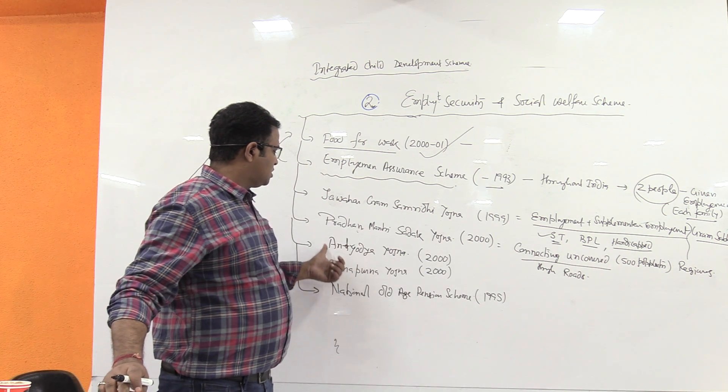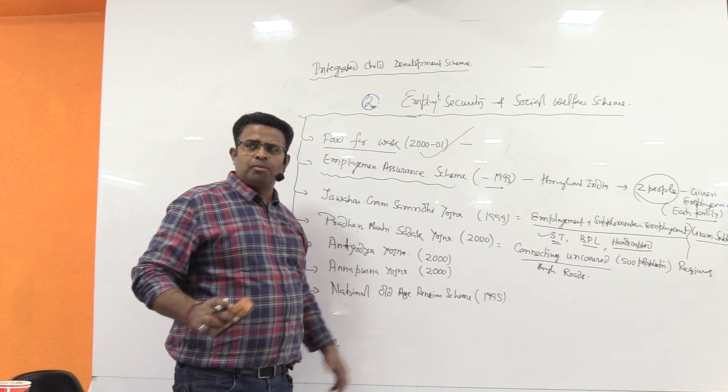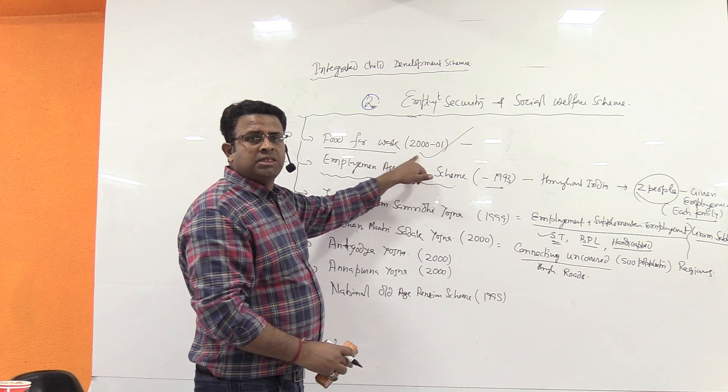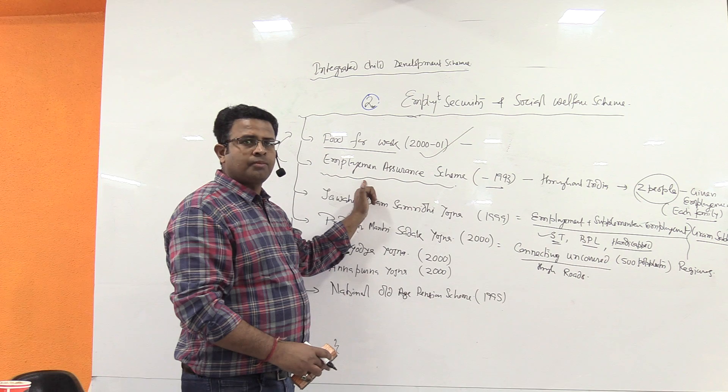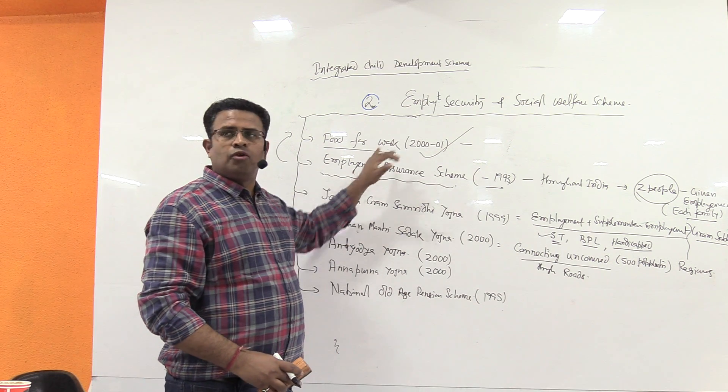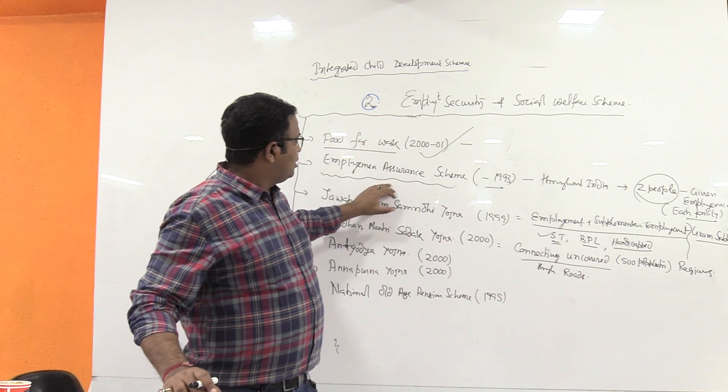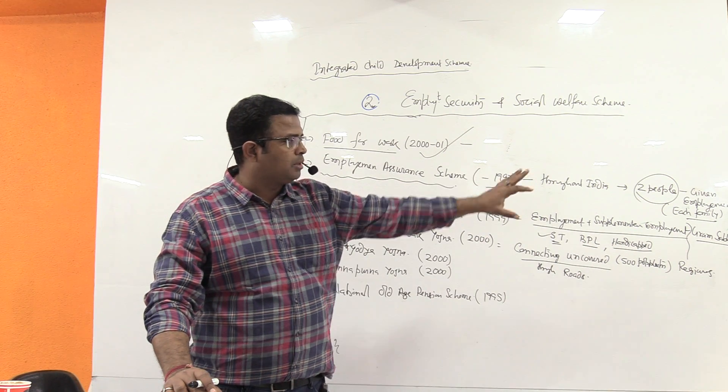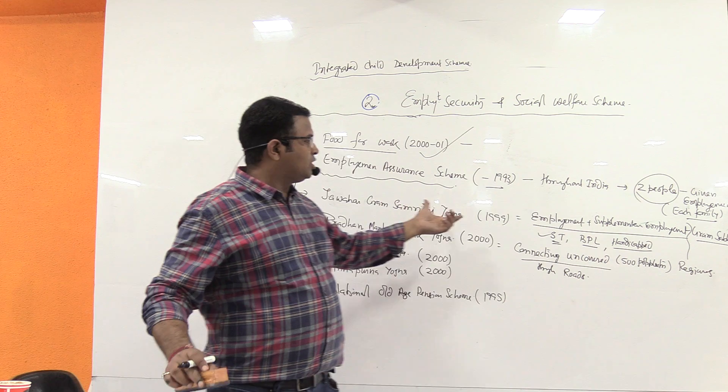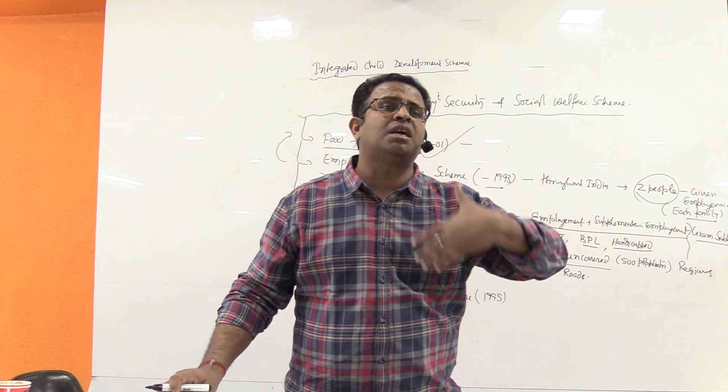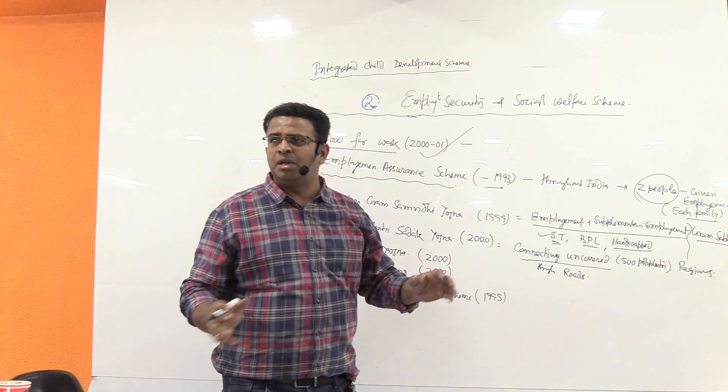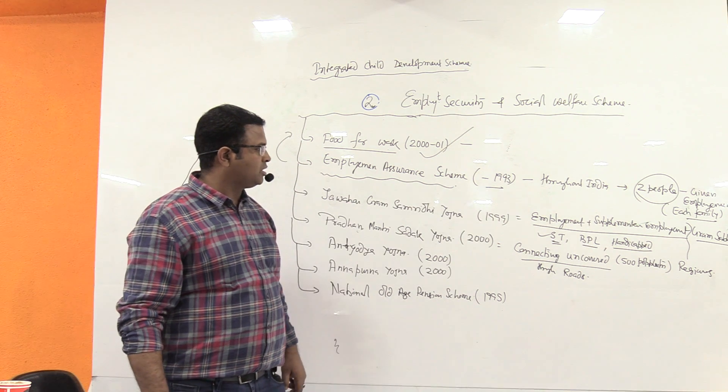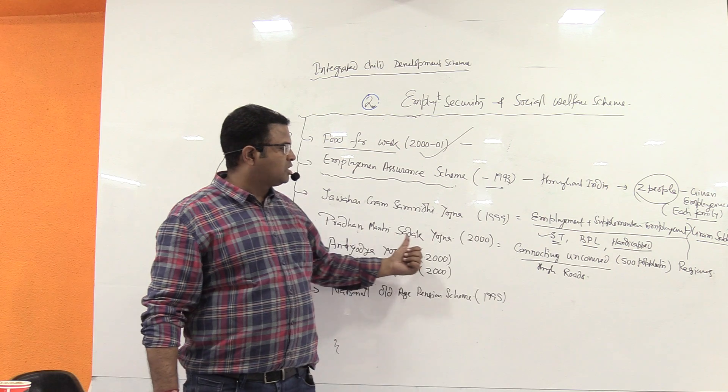These four are clear. Now we are coming towards Antyodaya Yojana. Shall I bifurcate this? Food for work eight states is part of employment assurance scheme. Then food and wages are provided. Employment assurance scheme throughout India. Right now, earlier selected areas were there. Two people given employment each family. Then employment plus, that's Gram Samriddhi, for supplementary employment. ST, BPL, handicapped. Pradhan Mantri Sadak Yojana, this is clear.